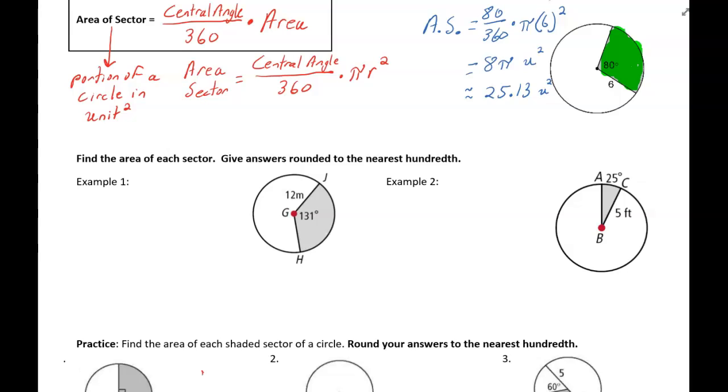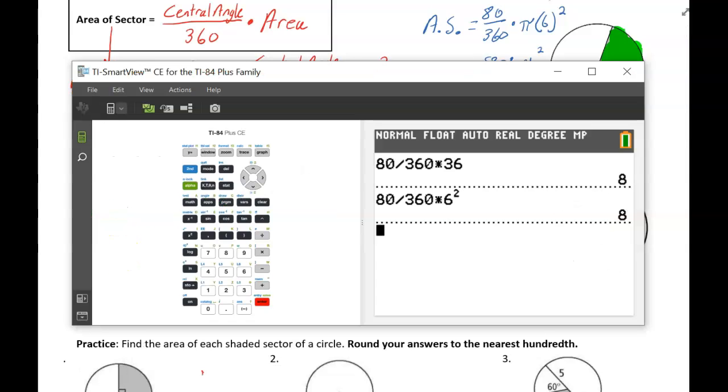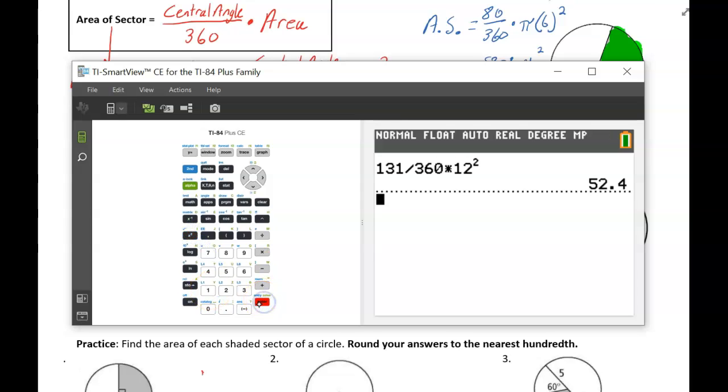Let's take a look at example number one. We want to find that area, that shaded region. So the area of the sector is going to be 131 over 360, central angle over 360 times pi times the radius, which is 12 squared. I'm going to type that into my calculator. So here, 131 divided by 360 times 12 squared. And when you do that, you'll see 52.4.